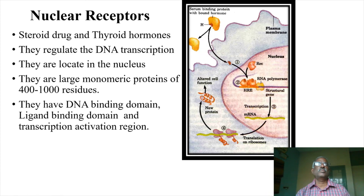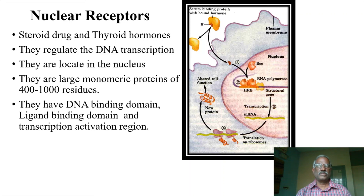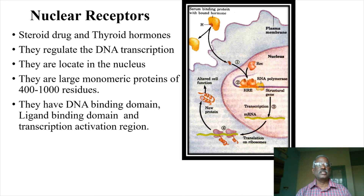So, if we discuss the four types of receptors: one is ion channel linked receptors, two is G-protein coupled receptors, three is tyrosine kinase linked receptors, and four is nuclear receptors.